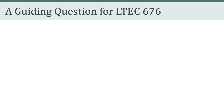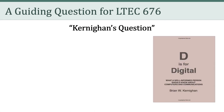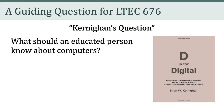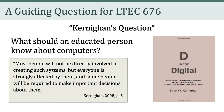This brings us to a guiding question we'll reference throughout the course — Kernahan's Question, named after Princeton computer science professor Brian Kernahan. Kernahan is famous for various books, such as his 2008 book titled D is for Digital, subtitled What a Well-Informed Person Should Know About Computers and Communications. In this book, Kernahan asks: What should an educated person know about computers? He writes on page 5: most people will not be directly involved in creating such systems, but everyone is strongly affected by them, and some people will be required to make important decisions about them.